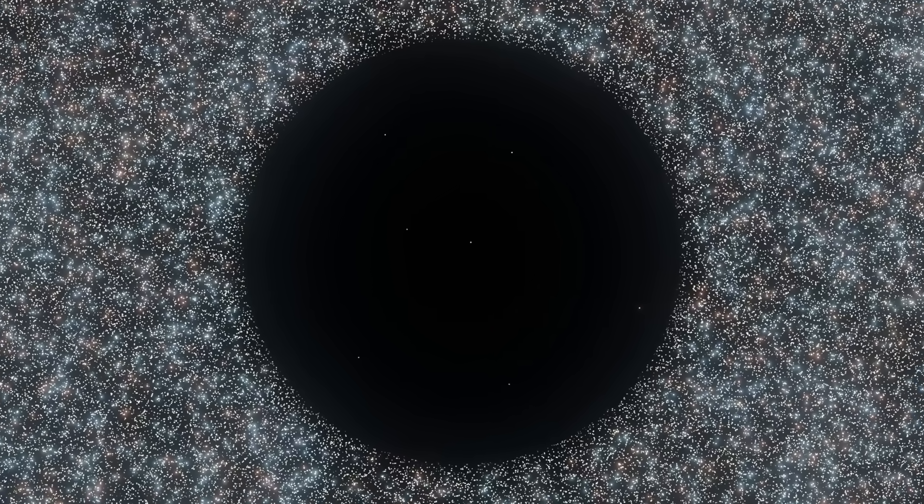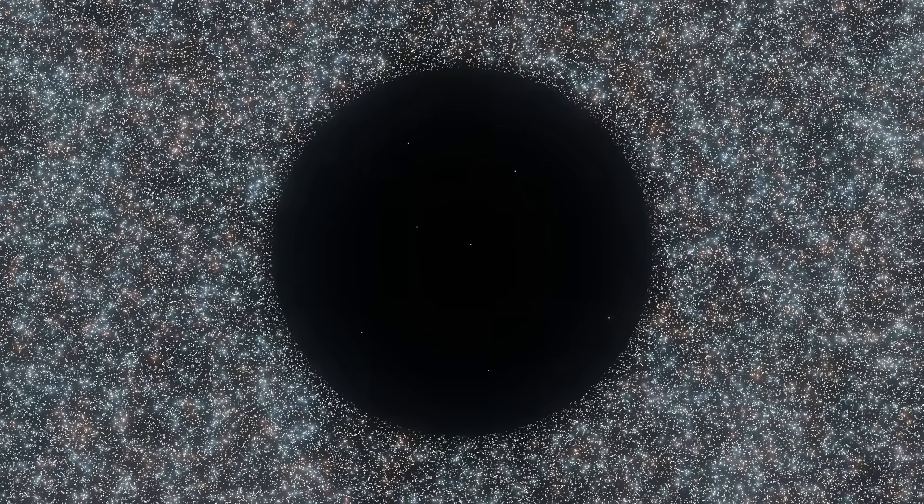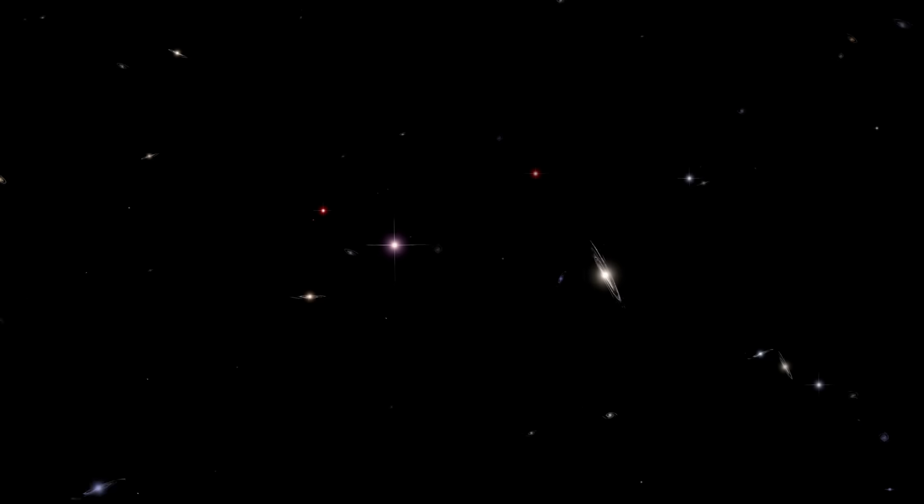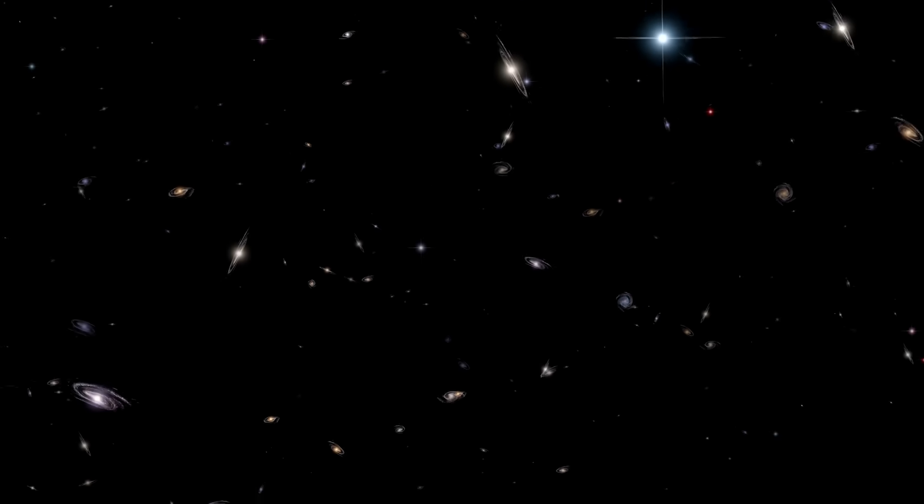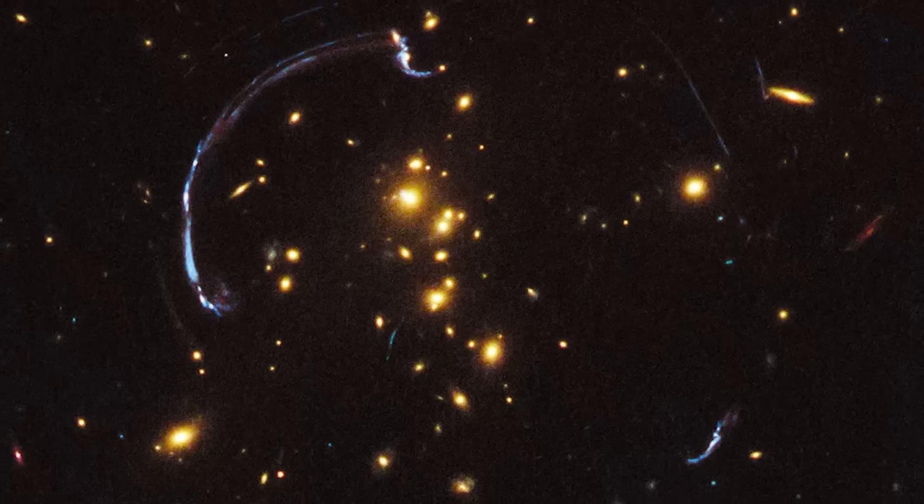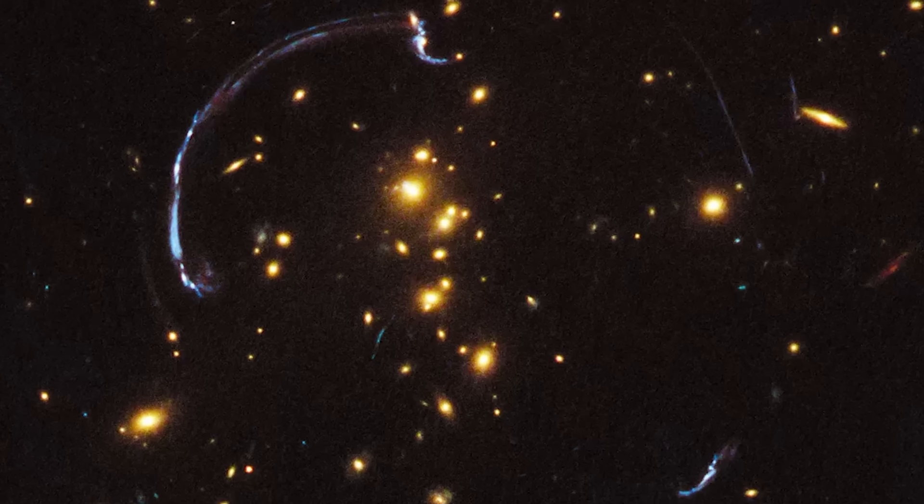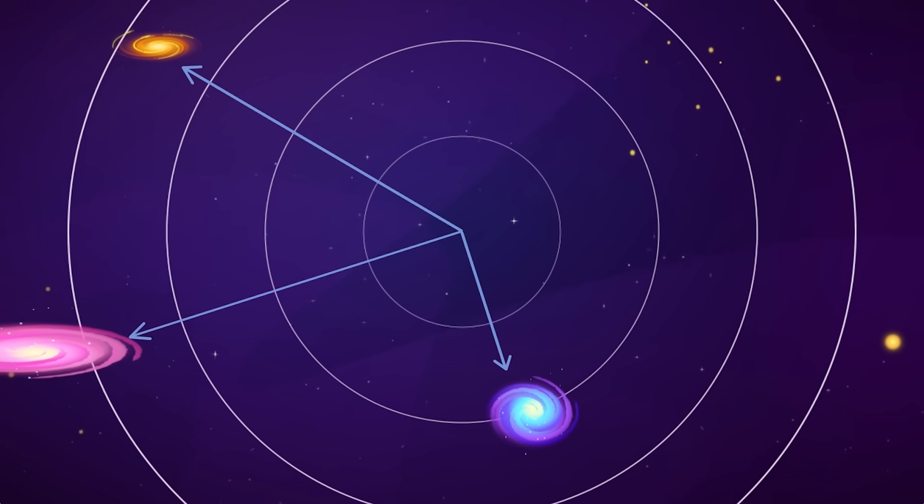This lower density means that objects within the void exert less gravitational pull, while the surrounding, denser regions exert a stronger gravitational force, pulling objects toward them. This creates the illusion that the local universe is expanding faster than it actually is, because we are being pulled by the gravity of objects outside the void. When scientists analyzed the matter density inside the KBC void up to a distance of 300 megaparsecs, they found it to be about 20% less than the universe's average density on larger scales. This lower density within the void correlates with previous studies showing that the expansion rate measured locally is about 11% greater than the true expansion rate. Essentially, the gravitational effects of the denser regions outside the void give us the impression of a faster expansion, which could explain the Hubble tension.